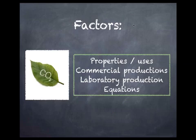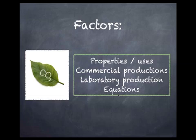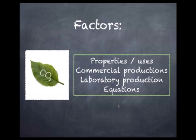What we're going to look at is these four main things. We're going to look at the properties and uses for each gas, the commercial production of each gas, and the laboratory production — how we might make the gas in the lab — along with some equations. For some equations I'm going to push you towards the Heinemann 1 textbook. So let's move on and look at the first gas, which is nitrogen.